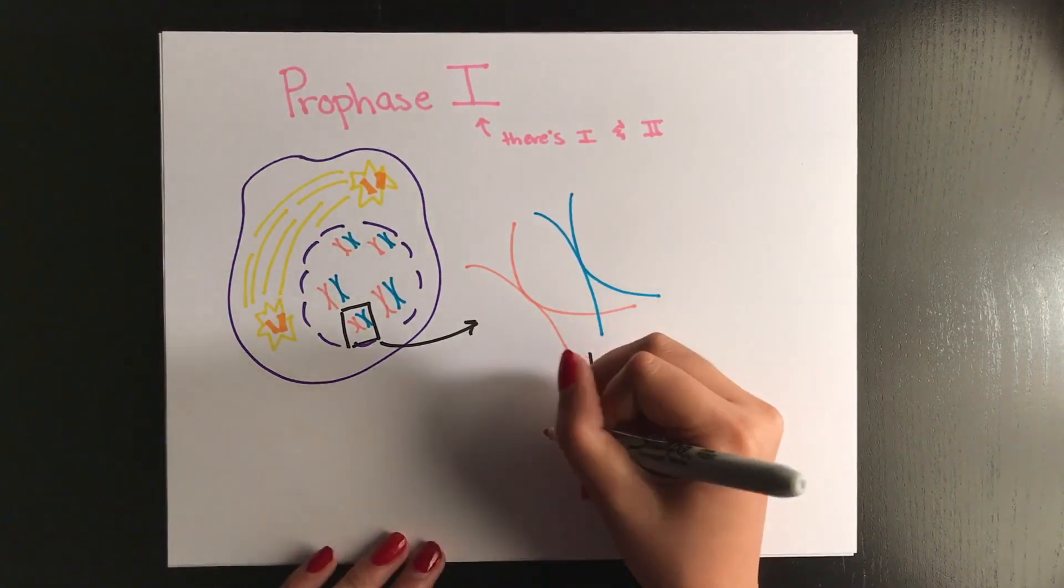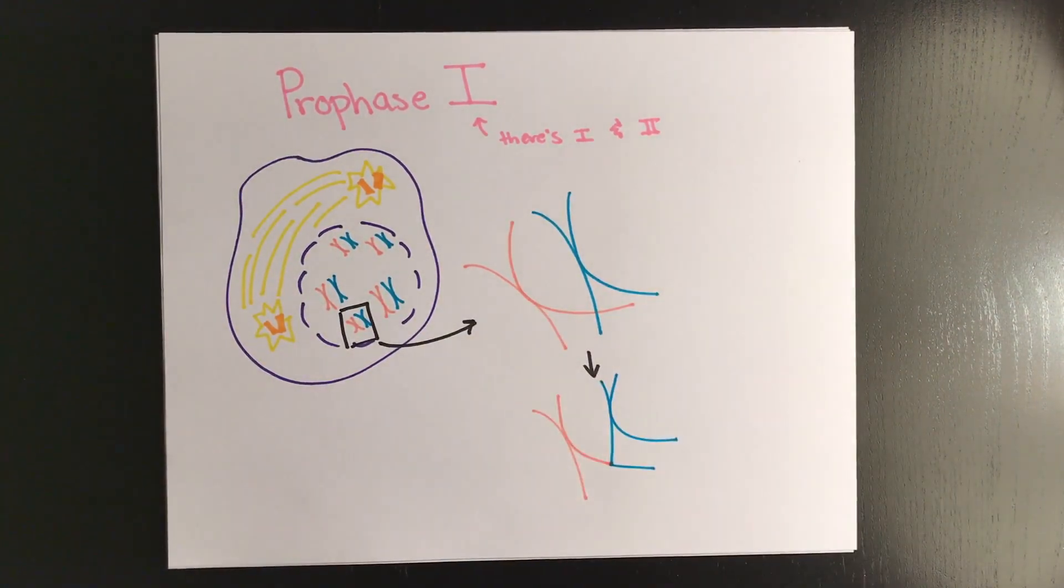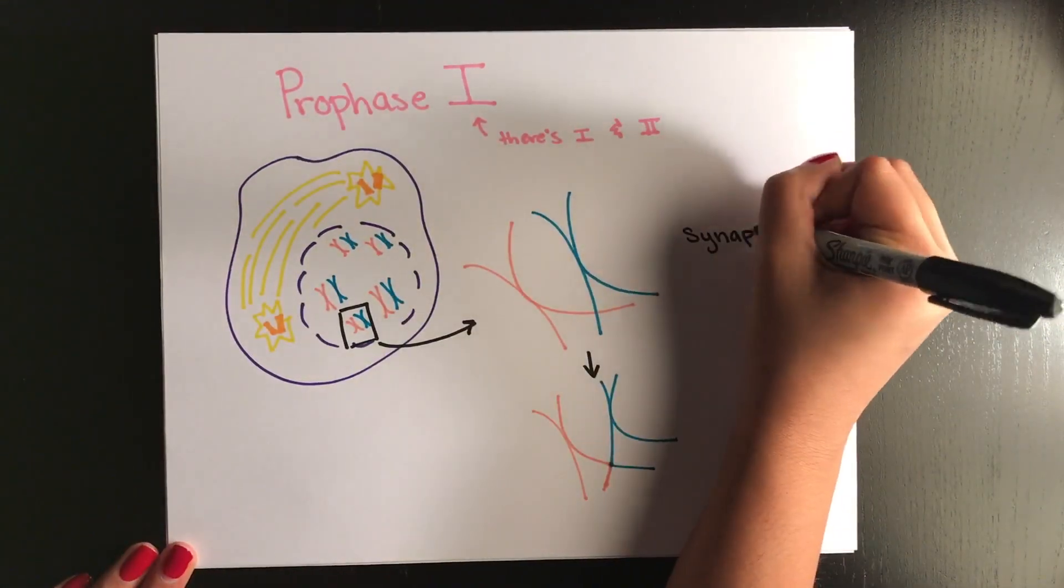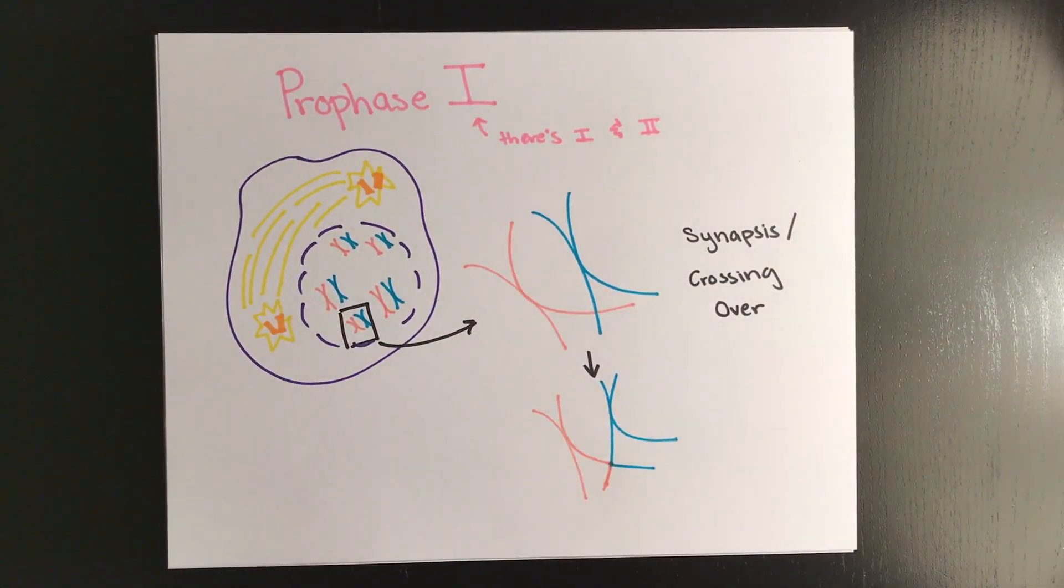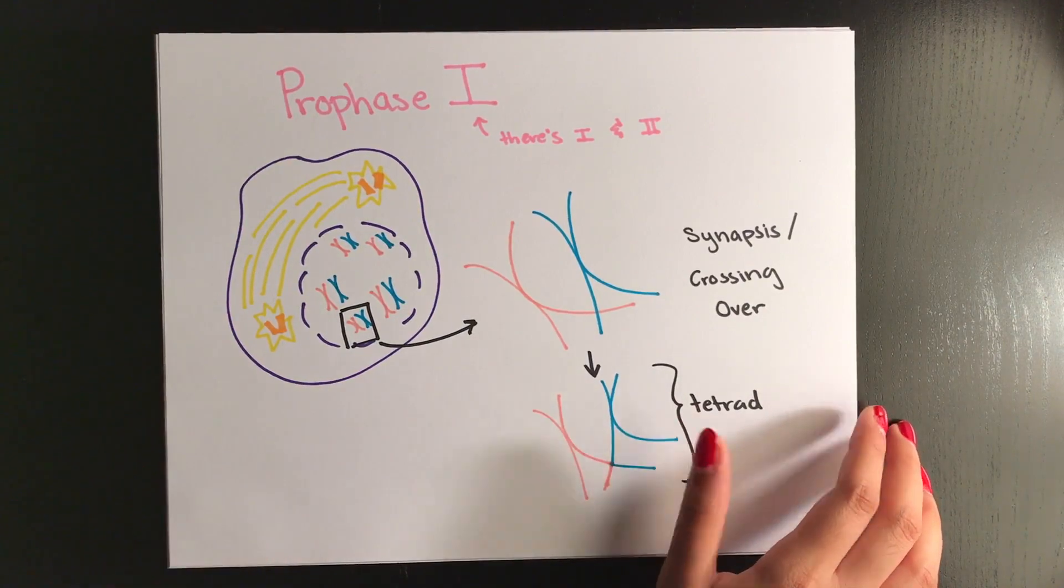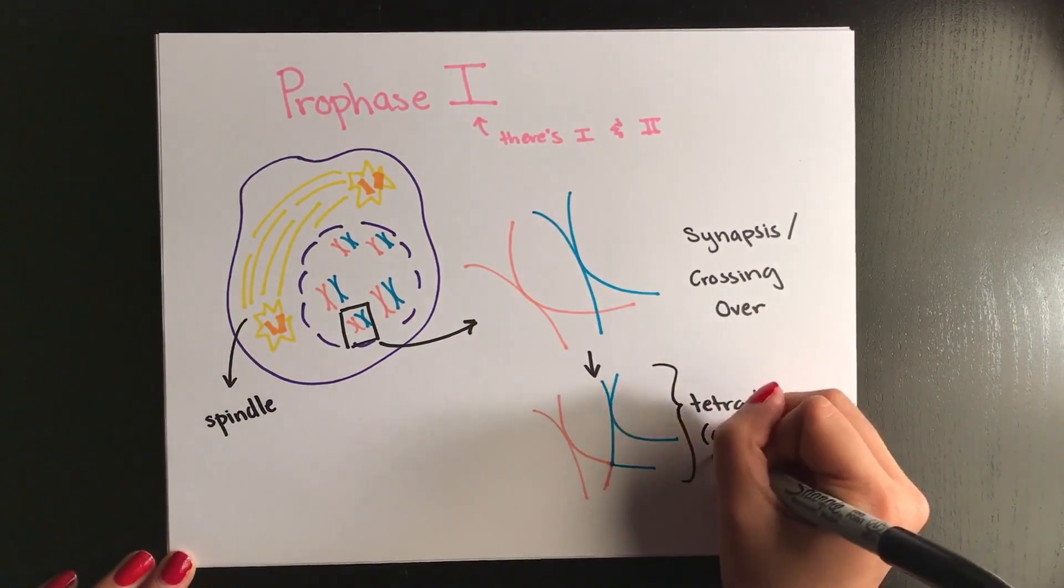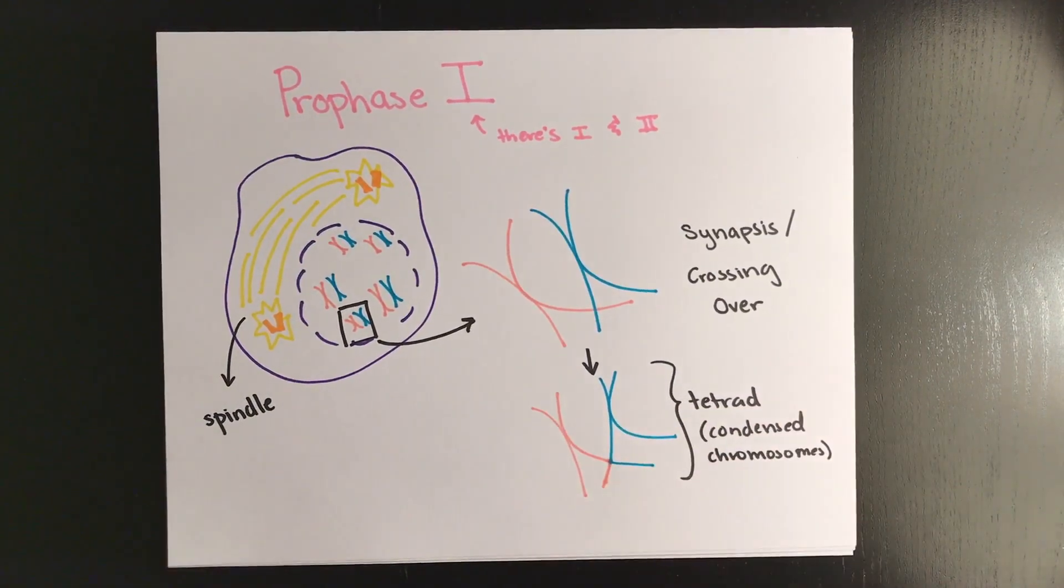After synapsis occurs, you're going to have crossing over, which takes place. This is when some segments of your homologous chromosomes are exchanged between each other, which is kind of confusing when you think about it. But really, it's just like you're giving somebody else their leg, they're giving you back another leg. Really weird example, but kind of works. Lastly, the spindle is formed, the chromosomes condense, and the nuclear membrane begins to disintegrate.